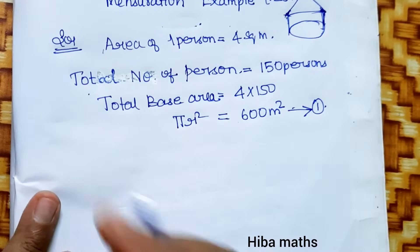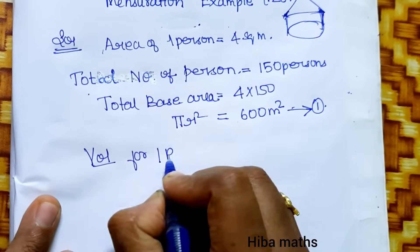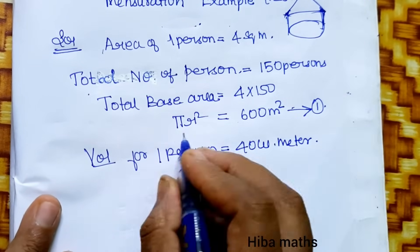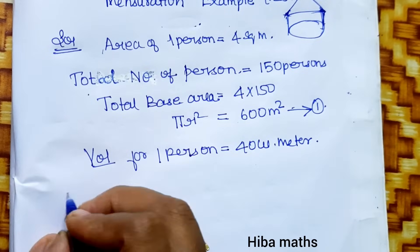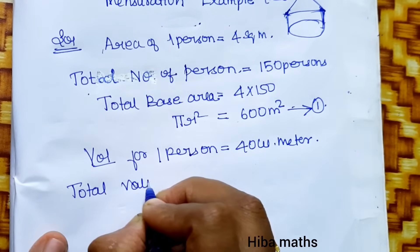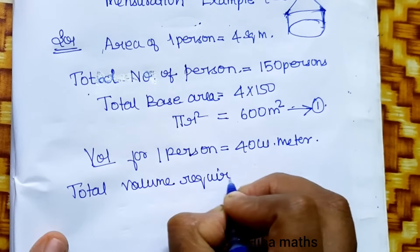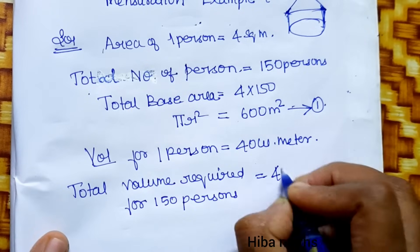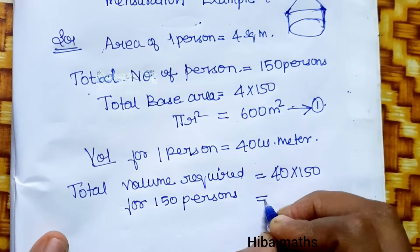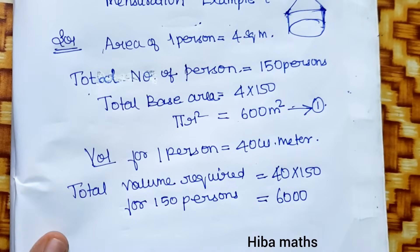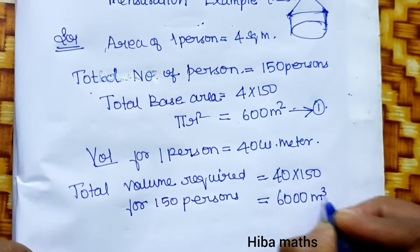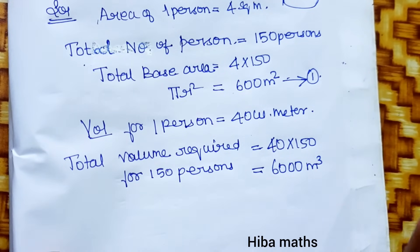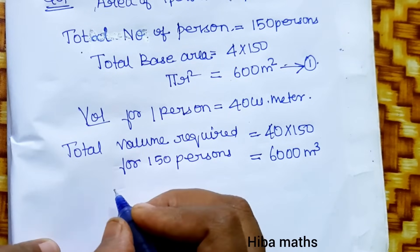The total volume required for one person is 40 cubic meters. Total number of persons is 150. Total volume required for 150 persons is 40 times 150, which equals 6000 cubic meters. The total volume is the volume of cylinder plus volume of cone.